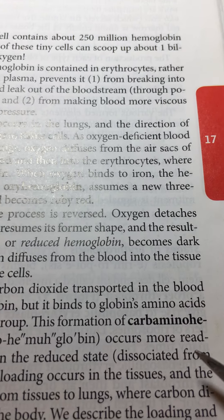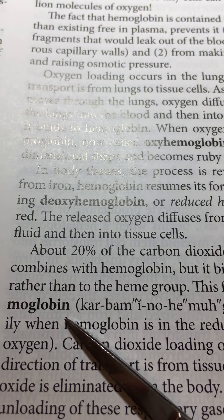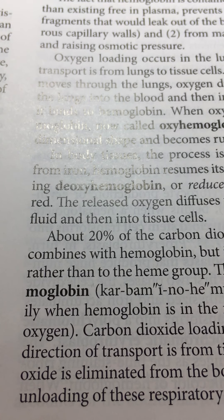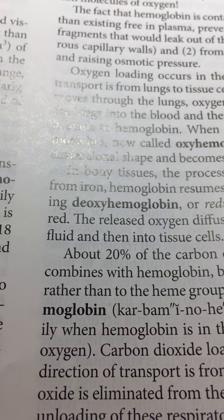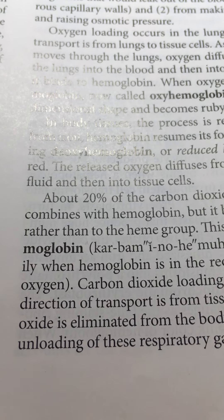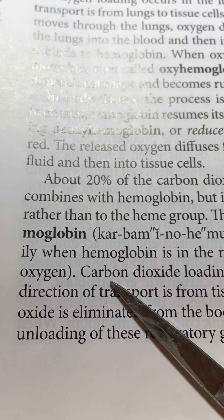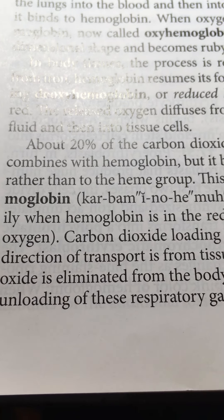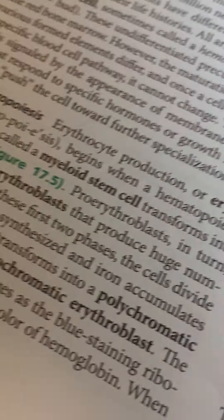We also have carbaminohemoglobin: once you've emptied the hemoglobin at the delivery site, you have empty hemoglobin that can take on a couple of CO2 molecules. CO2 doesn't fit as well onto the hemoglobin molecule, so it's a less efficient carrier. The good news is that most carbon dioxide travels as bicarbonate — HCO3 minus — so that's the primary CO2 transport mechanism.